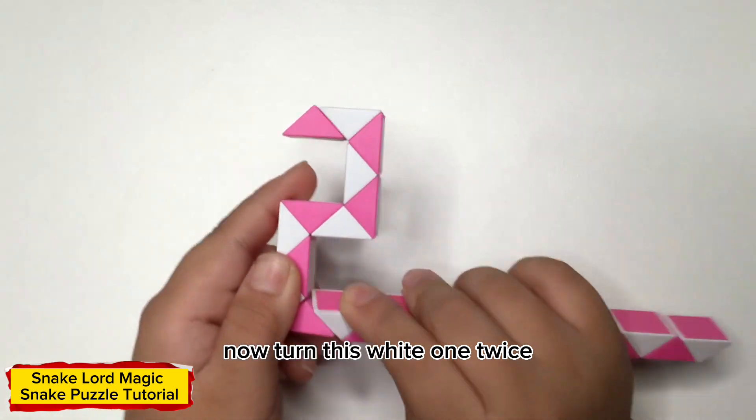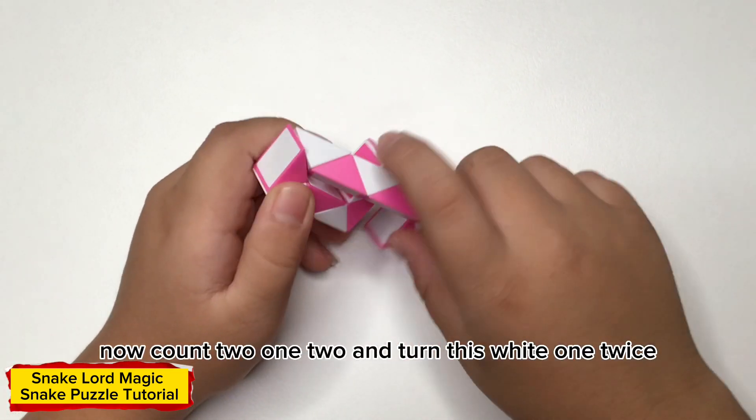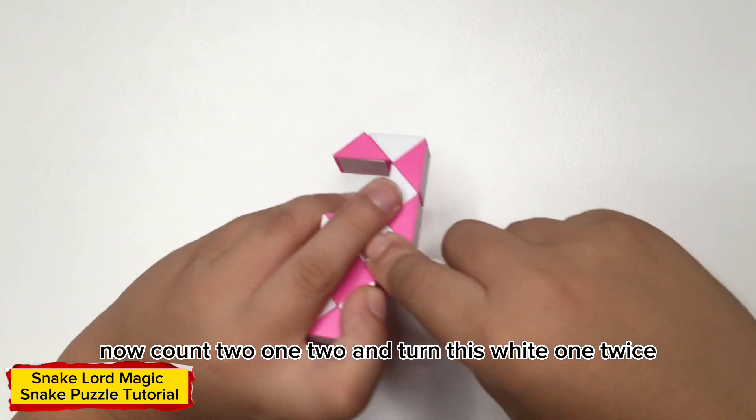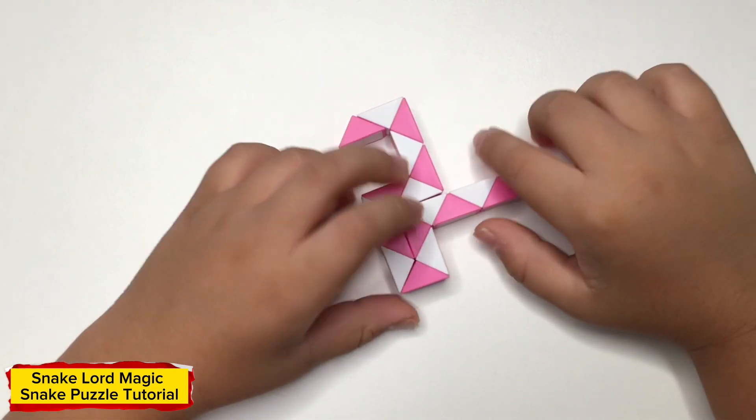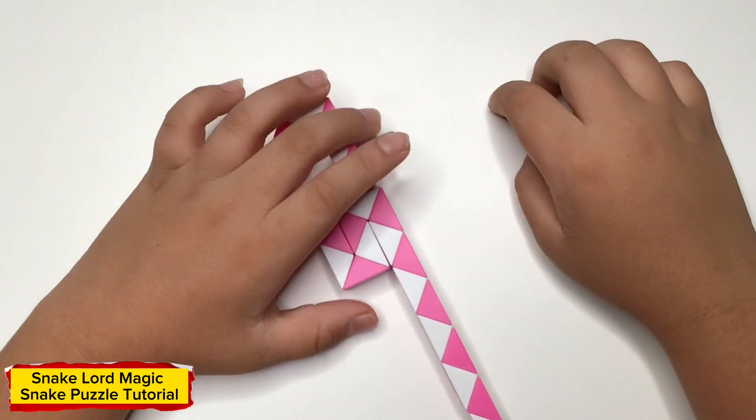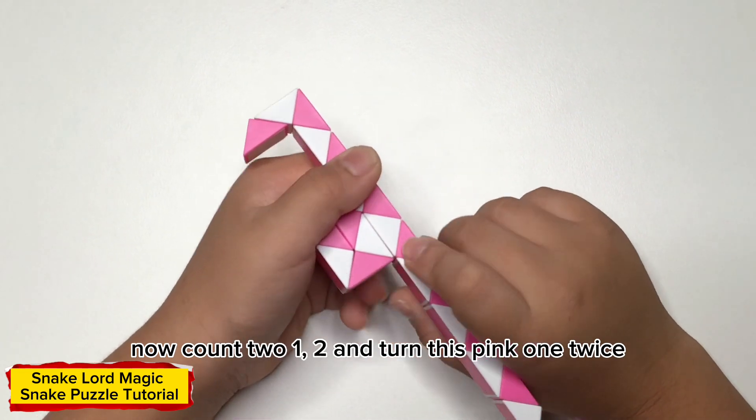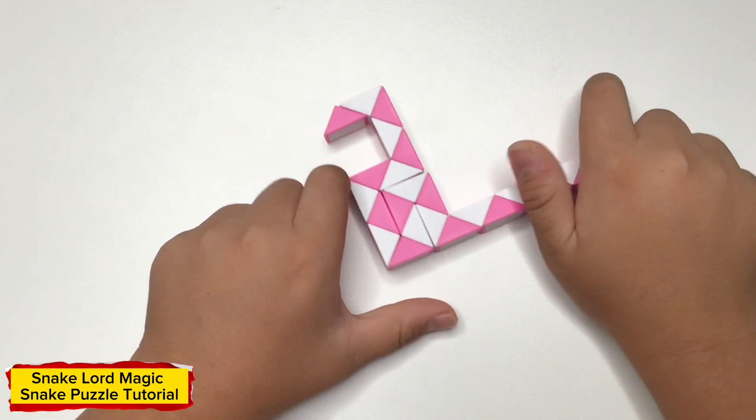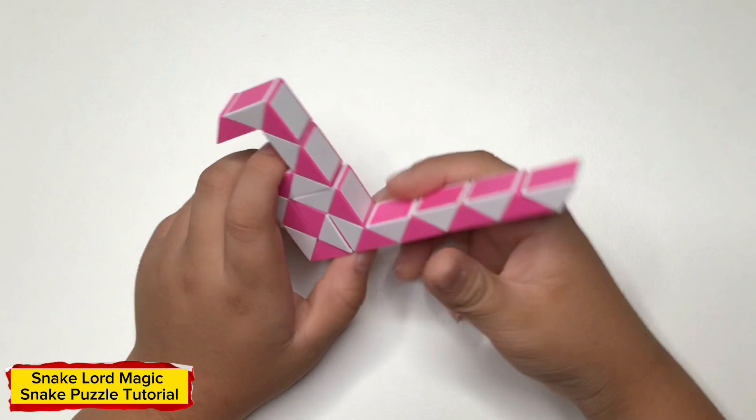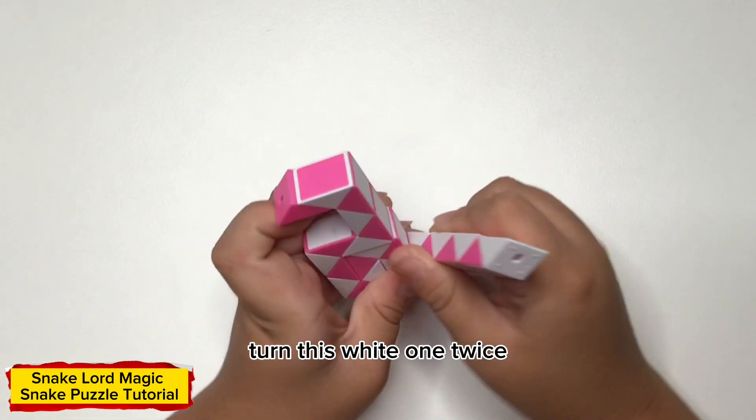Now turn this white 1 twice. Now count 2, 1, 2, and then twist piece 1 twice. Now count 2, 1, 2, and then twist piece 1 twice. Now turn this white 1 twice.